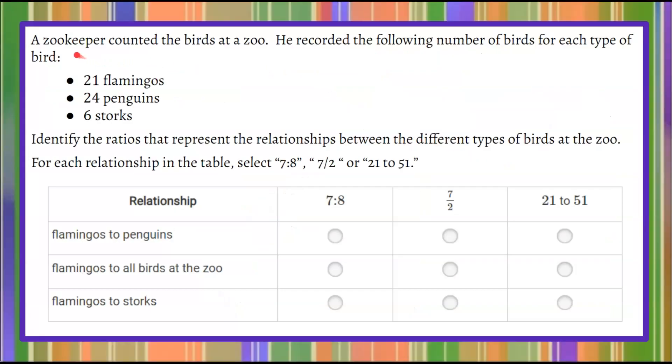We are presented with this problem. A zookeeper counted the birds at a zoo. He recorded the following number of birds for each type of bird: 21 flamingos, 24 penguins, and 6 storks.